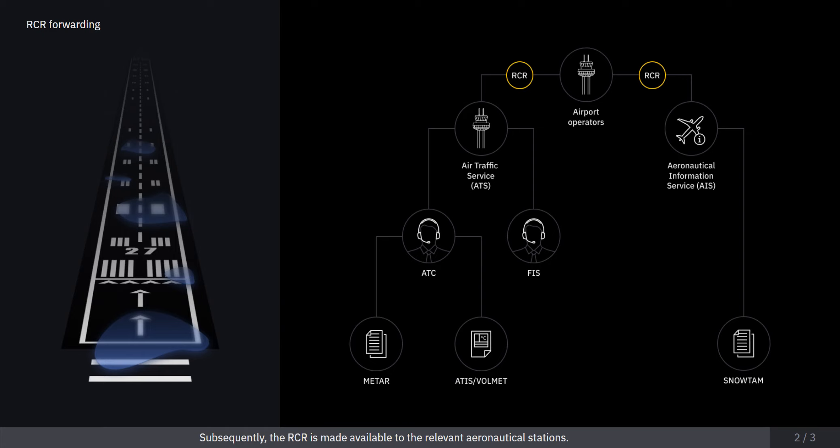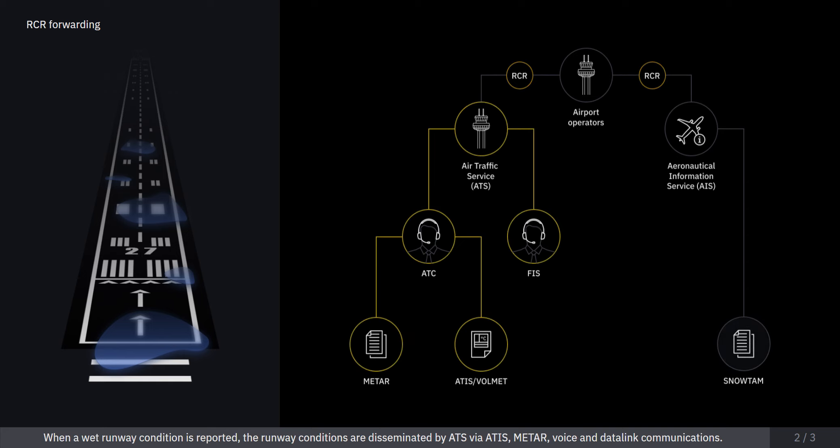Subsequently, the RCR is made available to the relevant aeronautical stations. The appropriate type of aeronautical messages shall be disseminated based on the conditions reported. When a wet runway condition is reported, the runway conditions are disseminated by ATS via ATIS, meter, voice, and datalink communications.